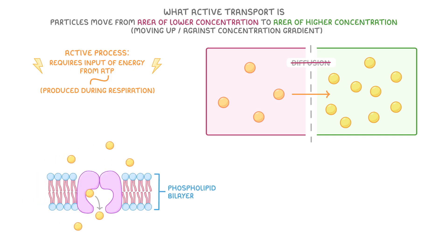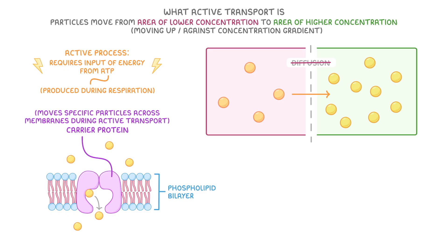The phospholipid bilayer that makes up the biggest part of cell membranes has proteins like carrier proteins embedded in them, and it's these proteins that typically move specific particles across membranes during active transport.